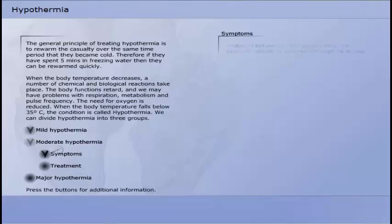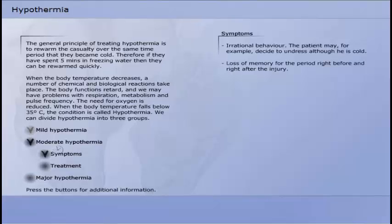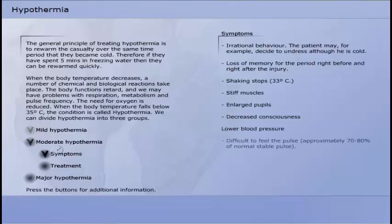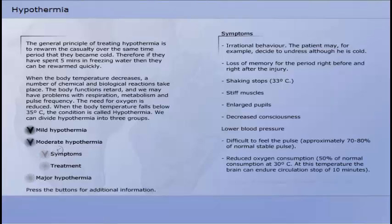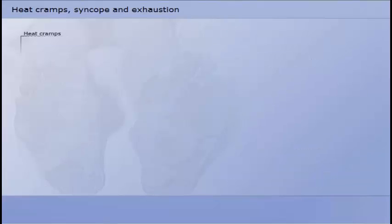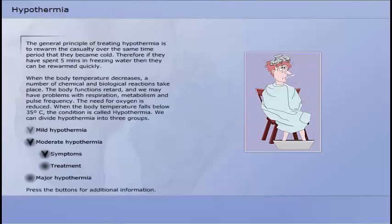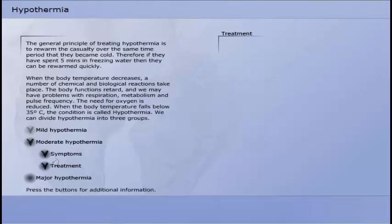The symptoms of moderate hypothermia are irrational behaviour. The patient may, for example, decide to undress although he is cold. Loss of memory for the period right before and right after the injury. Shaking stops. Stiff muscles. Enlarged pupils. Decreased consciousness. Lower blood pressure. Difficult to feel the pulse. Reduced oxygen consumption. Danger of ventricular fibrillation at less than 32 degrees Celsius.